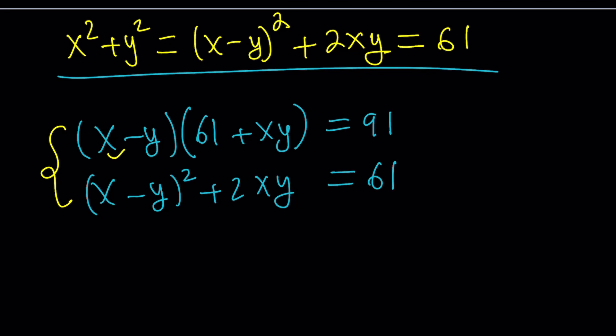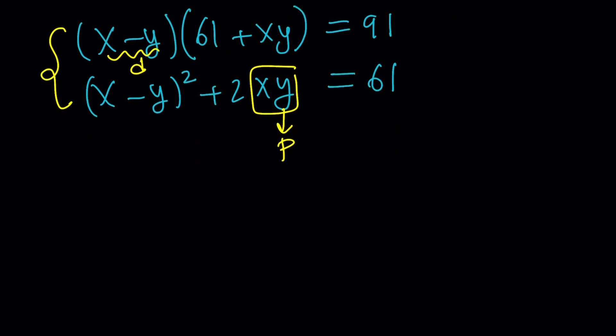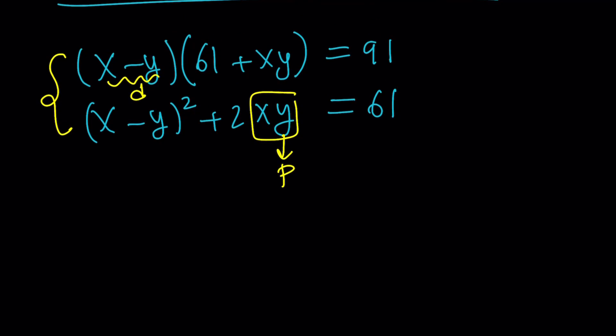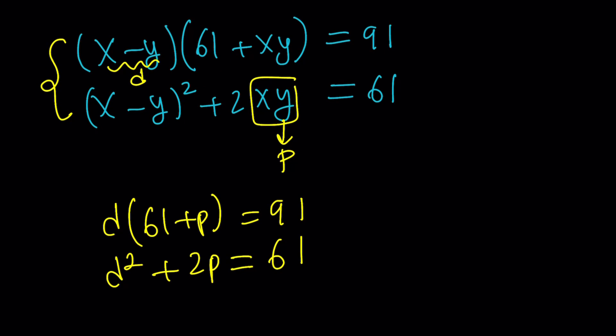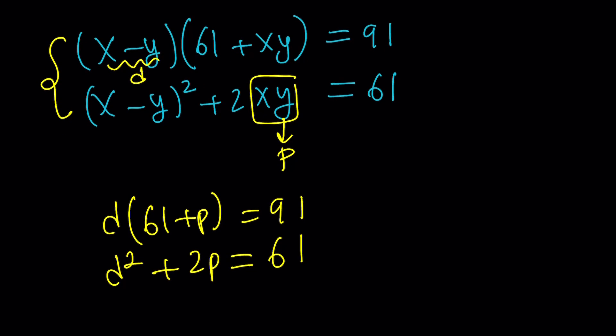So let's go ahead and call this something. How about calling the difference d and calling the product p? That makes sense. Now let's rewrite our equations under those conditions. d times 61 plus p equals 91. And then d squared plus 2p equals 61.